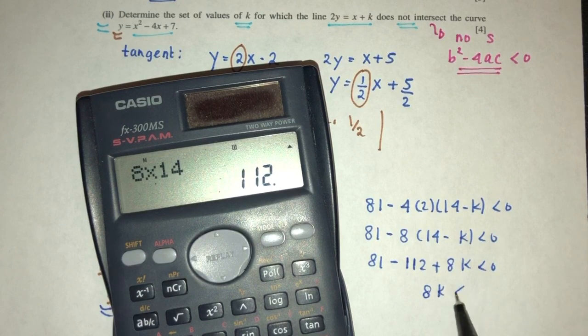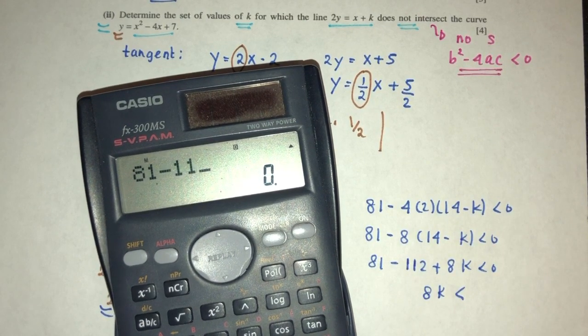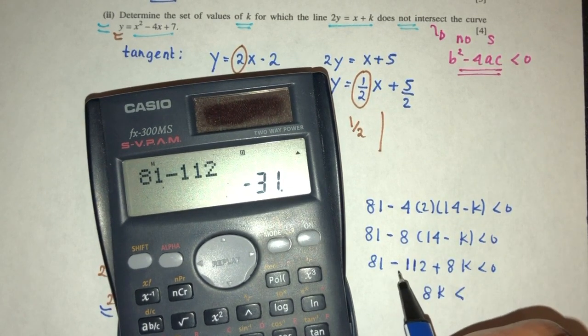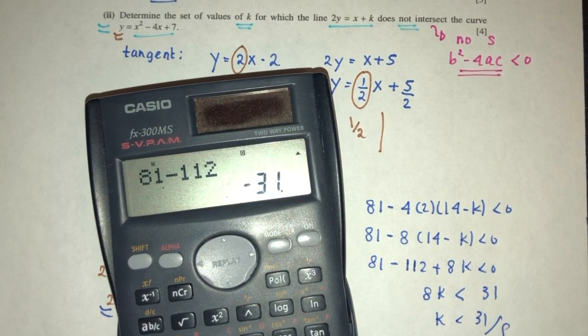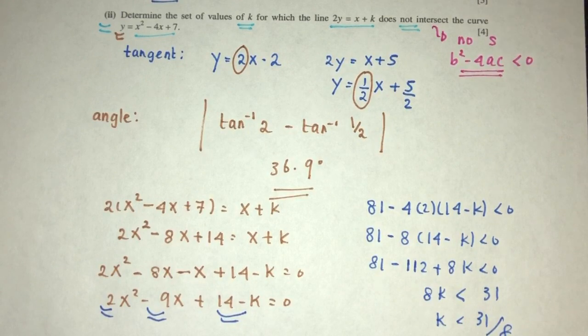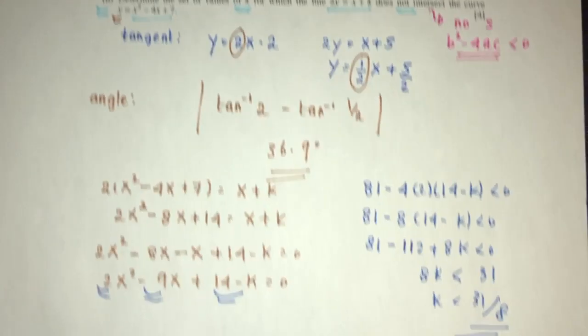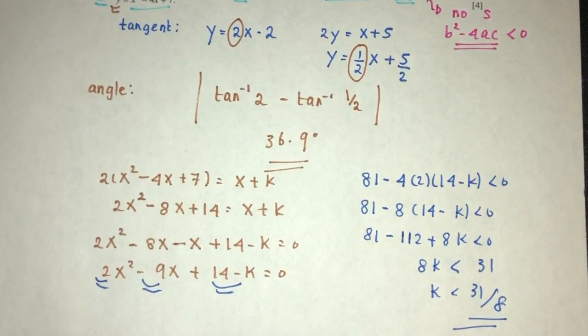So, 8k has to be 1. 81 minus 112. That will be minus 31. Send this over here, become 31. So, k has to be 31 over 8. So, this is the set of values for k. k has to be less than 31 over 8 for which it does not intersect the curve.